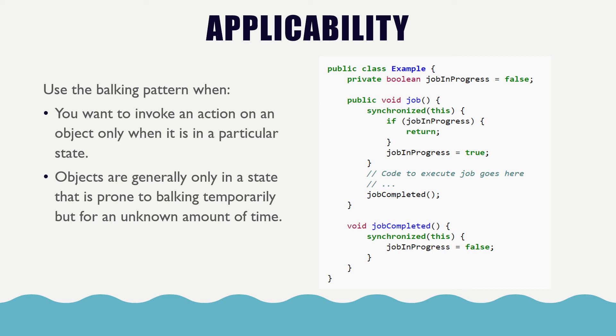So right here we have a general, simple example for an implementation of the balking pattern. Notice that the synchronized keyword is used. If there are multiple calls on the job method, only one will continue while the other calls will return nothing. Another thing to note is the job completed method. The reason it's synchronized is because the only way to guarantee another thread will see a change to a field is to synchronize all access to it or declare it as volatile.